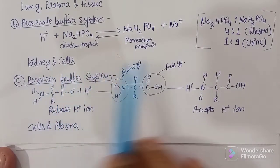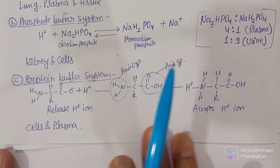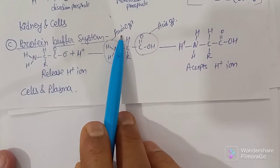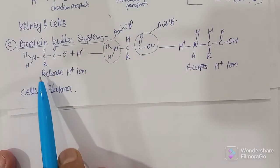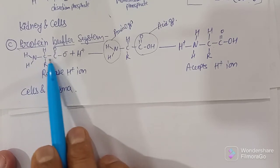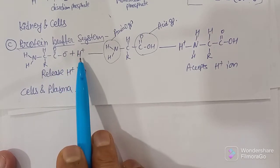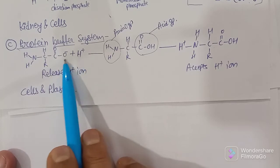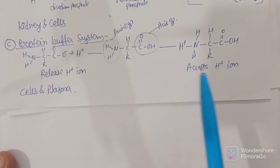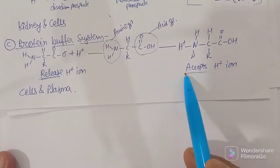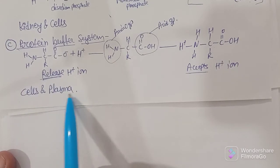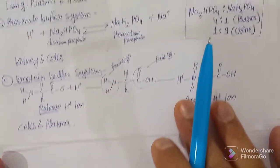The third is the protein buffer system. Proteins contain amino groups and acid groups. For example, a protein has an amino group (H2N), a functional group (R), and a carboxyl group (COOH) that can raise a hydrogen ion. When reacting with a hydrogen ion, it becomes an acid group. On one side it may release a hydrogen ion, and on the other it may accept one, depending on the situation. The protein buffer system is found in cells and plasma.